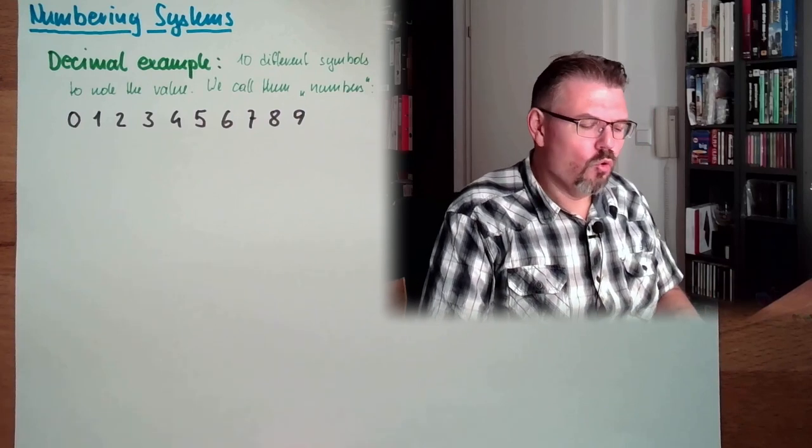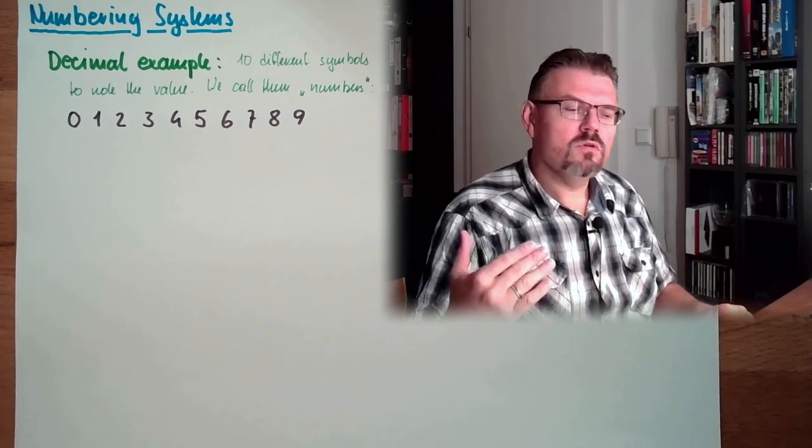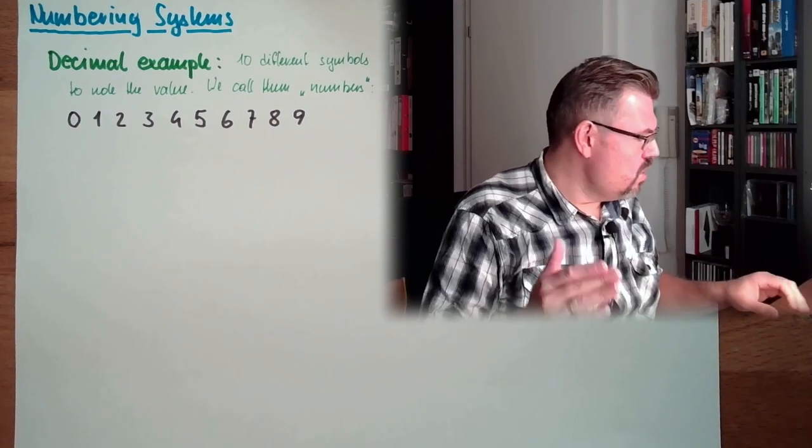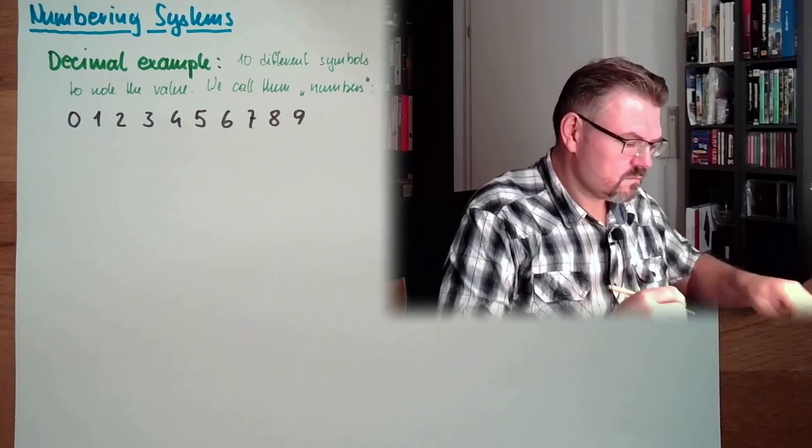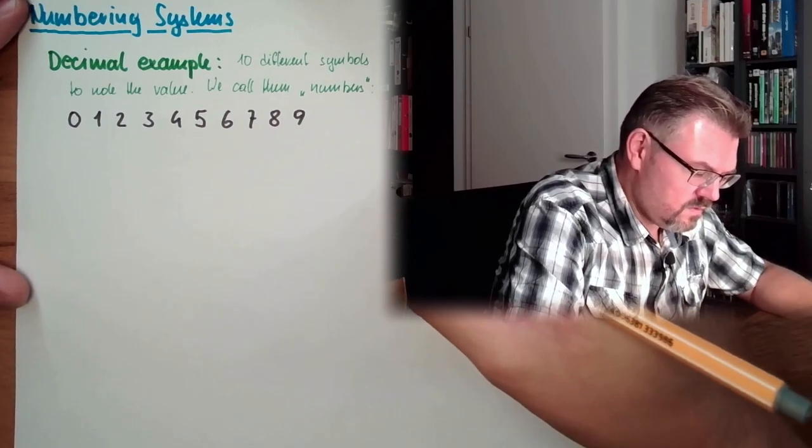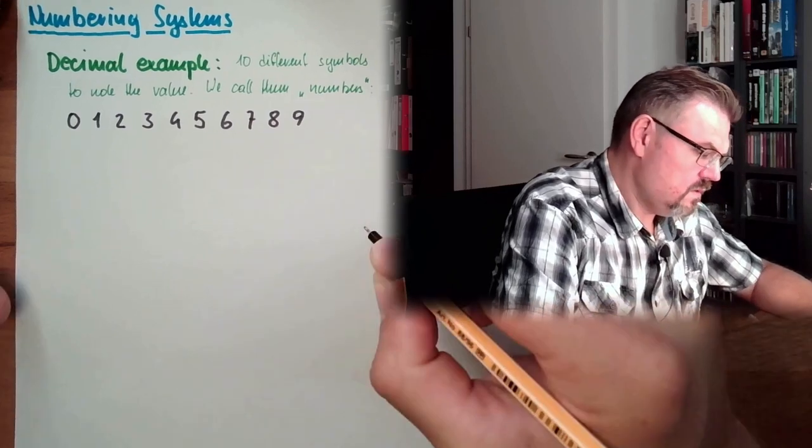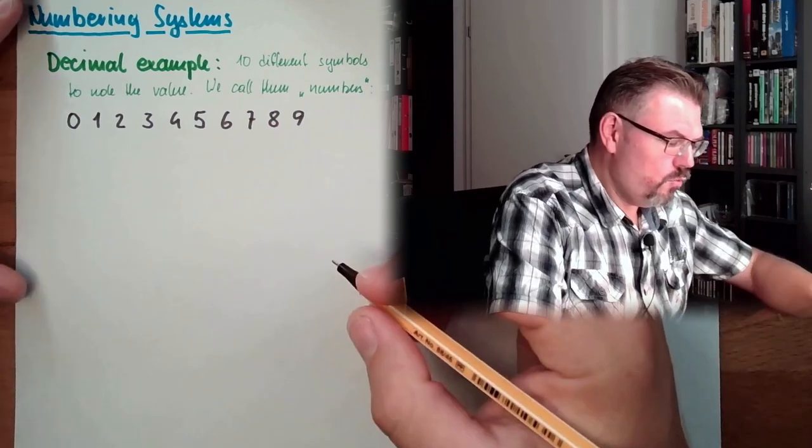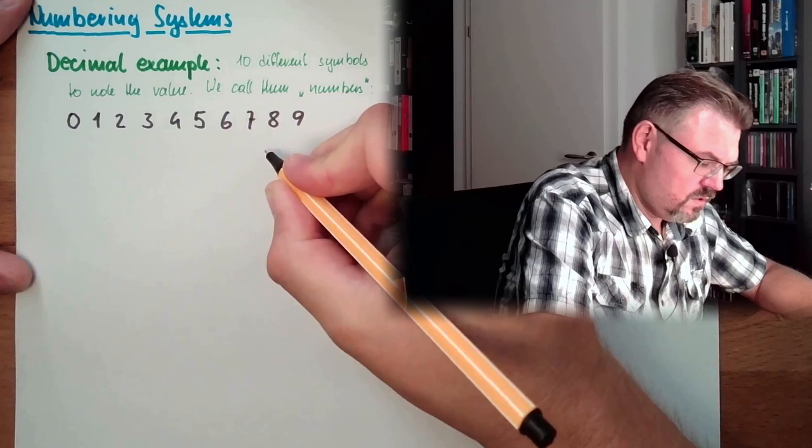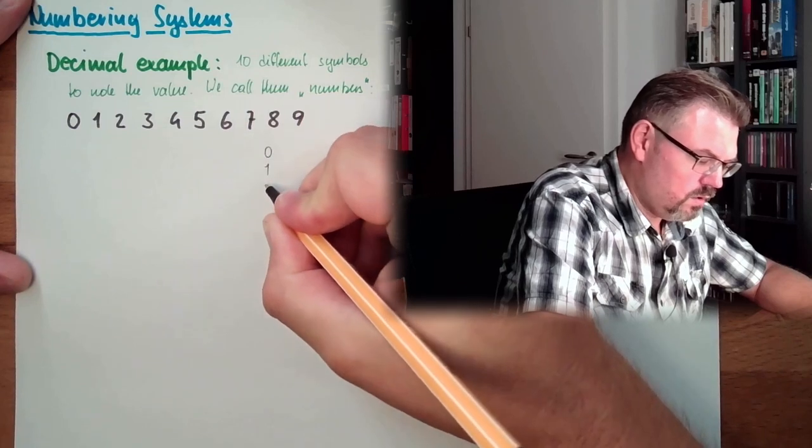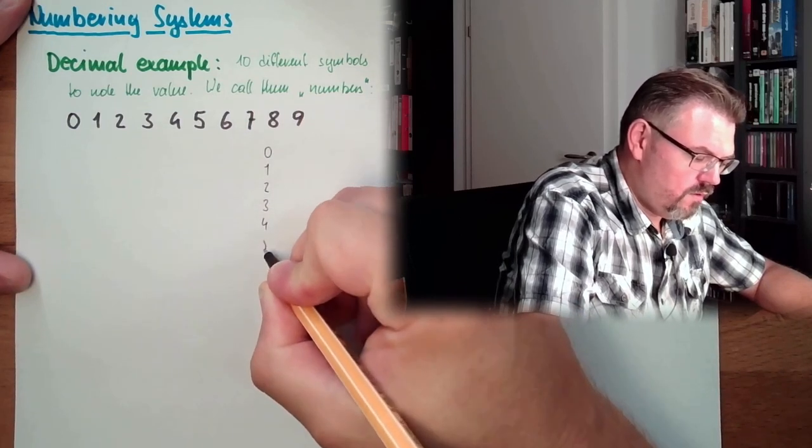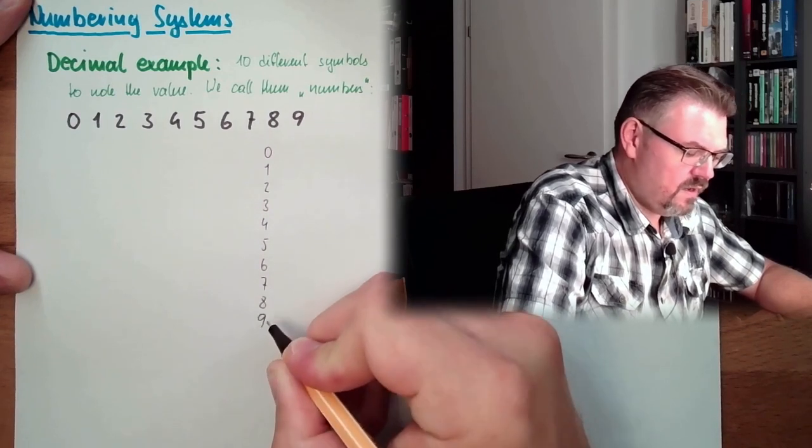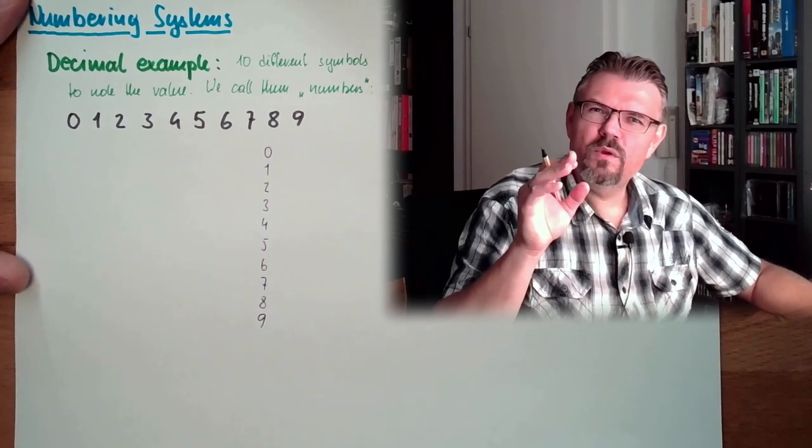So we could note with one of these symbols 10 different values. So we have one digit somewhere. Let's write it down. We are noting the value. So we are starting at 0, 1, 2, 3, 4, 5, 6, 7, 8, 9. And then we are out of symbols. What do we do then?